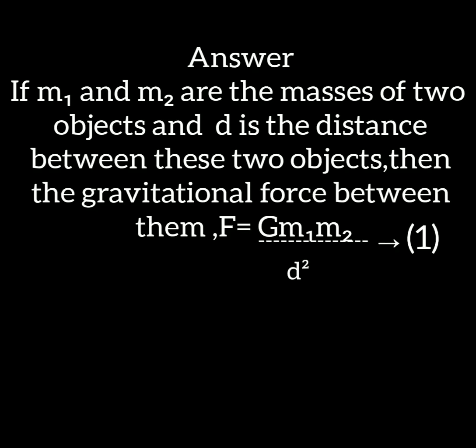To find the solution, we should consider two objects. If M1 and M2 are the masses of two objects and D is the distance between them, then the gravitational force based on the universal law of gravitation is F equals G M1 M2 divided by D square. Put it as equation number 1.